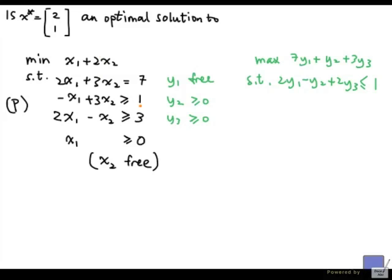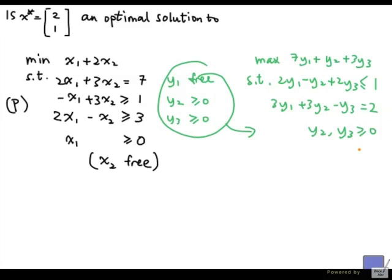And for x2, we get the constraint 3y1 plus 3y2 minus y3. And this time, it's equal to 2 because x2 is not constrained to be non-negative or non-positive. And we bring this over here, so y2 and y3 have to be non-negative.